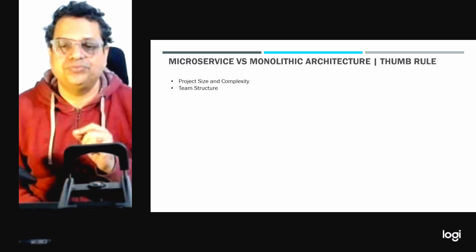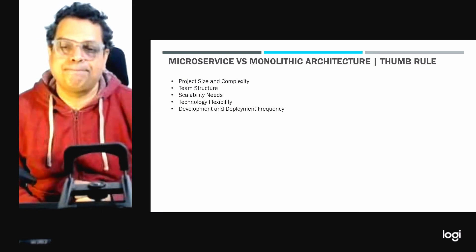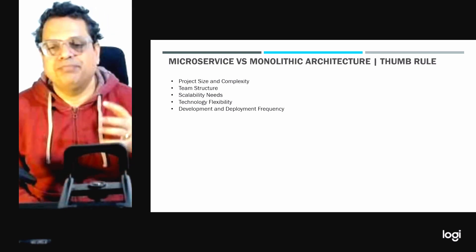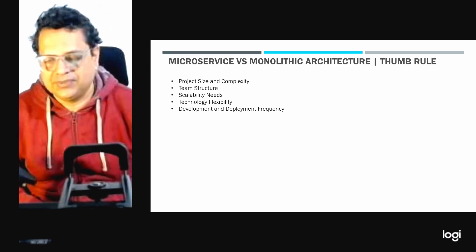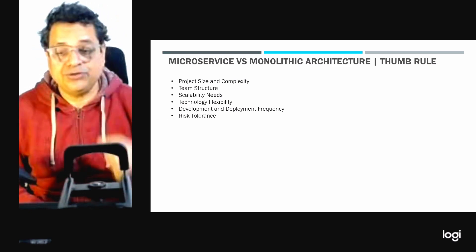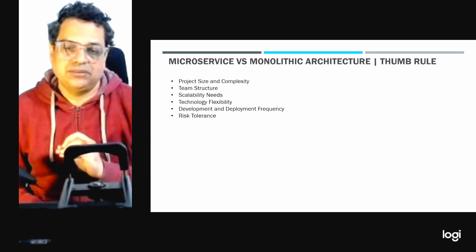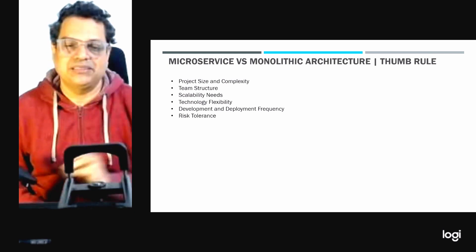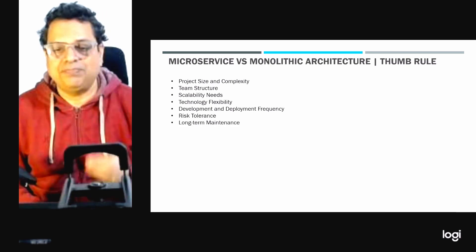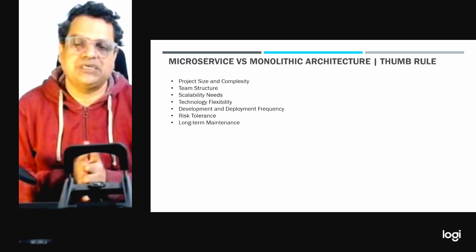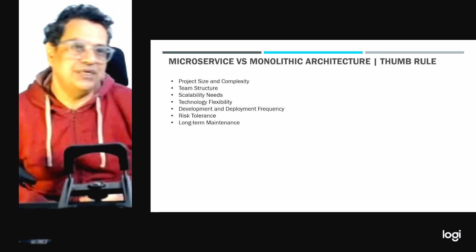Another key factor is development and deployment frequency. Microservices are preferable for continuous development and deployment environments, whereas monolithic is suitable for projects with less frequent updates. The next factor is risk tolerance — microservices are acceptable if the organization can manage the complexity and potential issues of a distributed system, but monolithic would be chosen if minimizing initial risk and complexity is a priority. For long-term maintenance, if the application requires continuous updates, microservices can be a more manageable choice; for a relatively stable feature set with less frequent updates, monolithic is better.